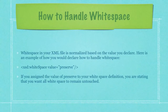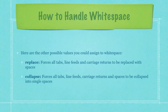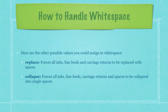Whitespace in your XML file is normalized based on the value you declare. Here's an example of how you would declare how to handle whitespace. If you assign the value 'preserve,' you're stating that you want all whitespace to remain completely untouched. 'Replace' forces all tabs, line feeds, and carriage returns to be replaced with simple spaces. 'Collapse,' on the other hand, forces all tabs, line feeds, carriage returns, and spaces to be collapsed into just single spaces.